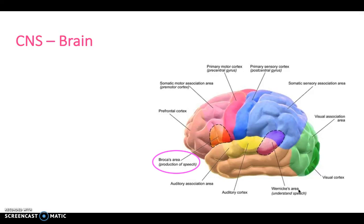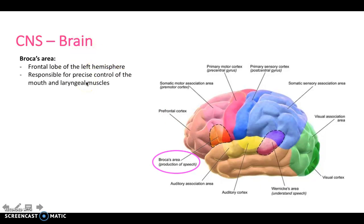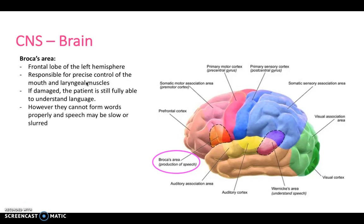Broca's area is an area for production of speech. It's located in the frontal lobe of the left hemisphere in the majority of people and is responsible for precise control of the mouth and laryngeal muscles. If it's damaged, the patient's still fully able to understand language but isn't able to form words properly, and therefore their speech may be slow or slurred. This can be really frustrating for patients because they're just as intelligent as they were before.